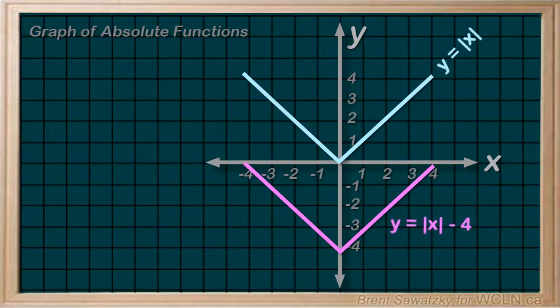We just have to remember that the portion in the absolute sign is kept positive. Additions or subtractions or multiplications outside of the absolute sign have the ability to transform the relationship so that some or even all of the graph ends up below the x-axis.